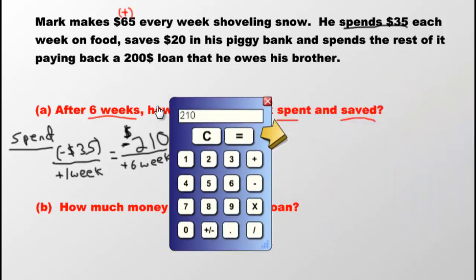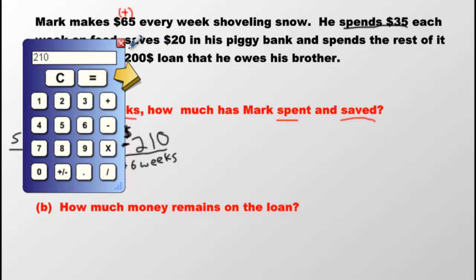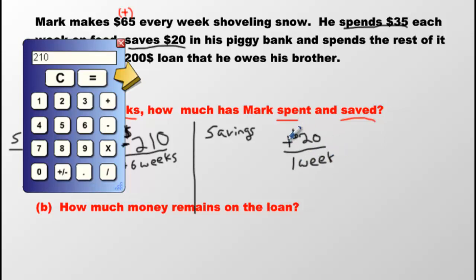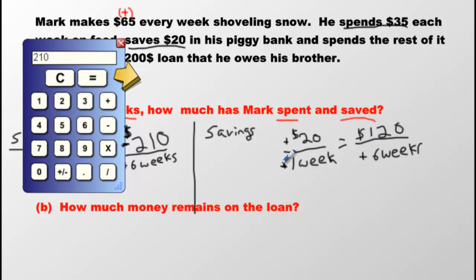But how much did he save? He's saving $20 every week, so we write positive $20 over one positive week. We want to know after 6 weeks, so positive 6 weeks. Positive times positive is positive, positive divided by positive is still positive. So 6 times 20 is $120 — positive $120. That's great because savings make you richer; he got $120 richer after those 6 weeks.